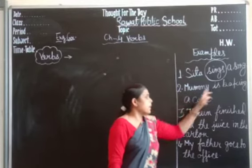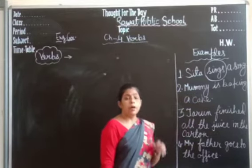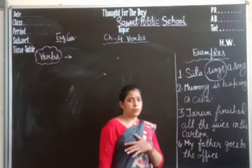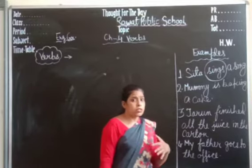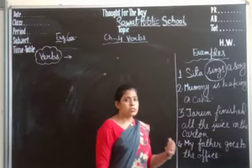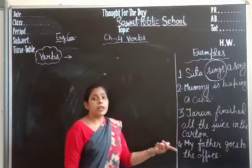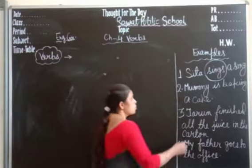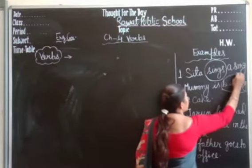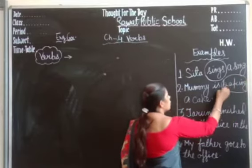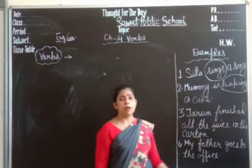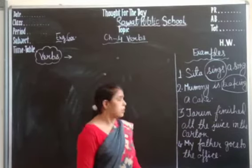The second sentence is: Mummy is baking a cake. So what verb is mummy doing here? She is baking. The verb being done by mummy is baking.